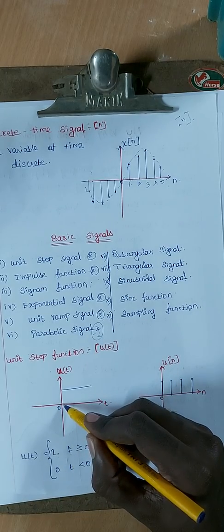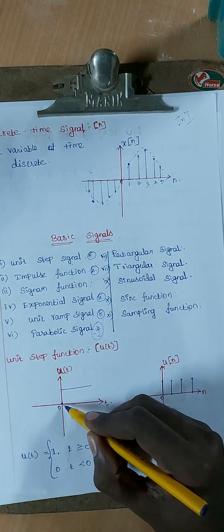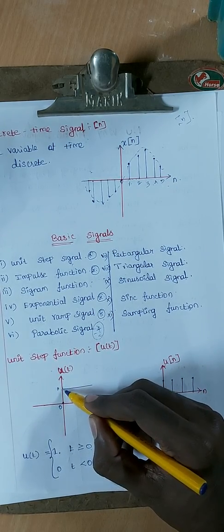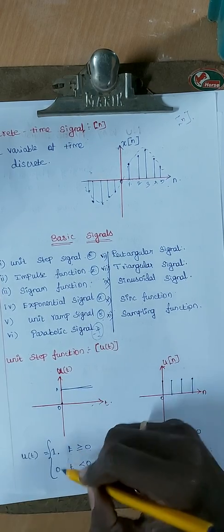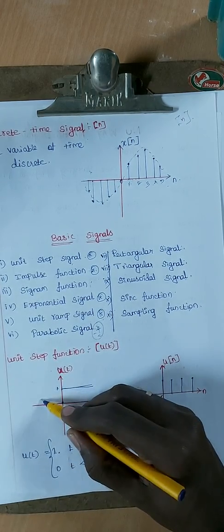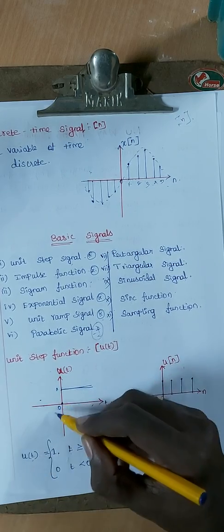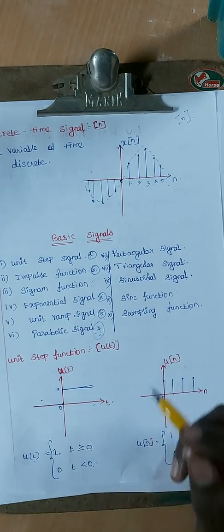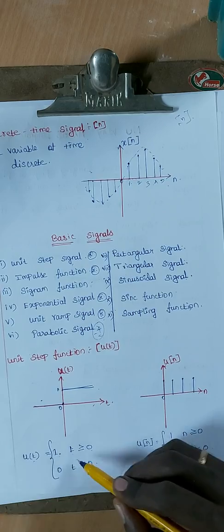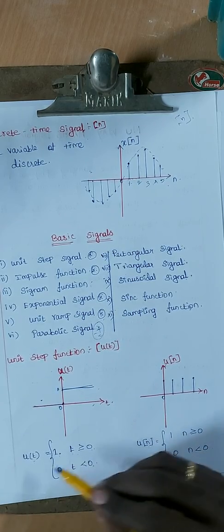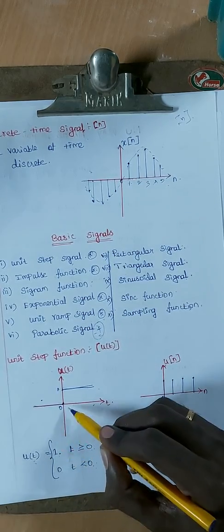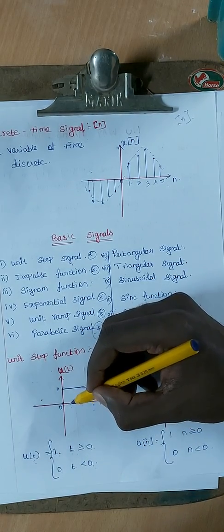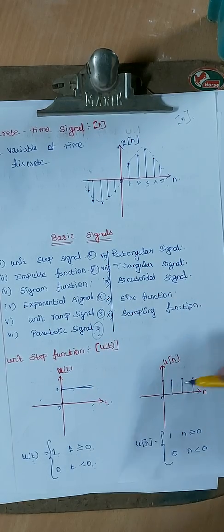For the unit step signal in continuous time: the function equals 1 when time is greater than or equal to 0. The amplitude is 1, and this is the continuous time version.